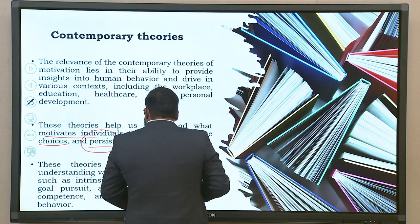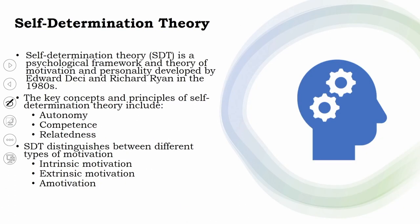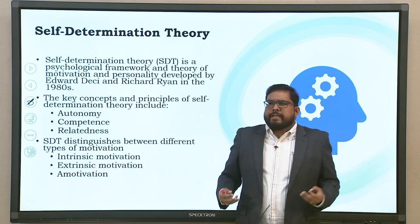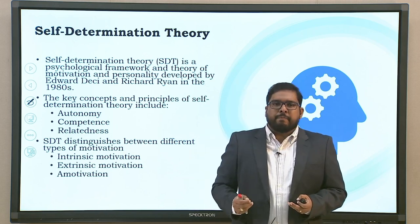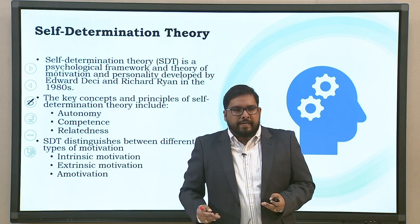All these theories provide a framework for understanding aspects of motivation such as intrinsic and extrinsic motivation, goal pursuit, and the role of autonomy, competence, and relatedness in driving behaviour. This brings us to Self-Determination Theory. SDT is a very popular theory when it comes to motivation. Self-Determination Theory, or SDT, is a psychological framework and theory of motivation and personality development given by Deci and Ryan in the 1980s.